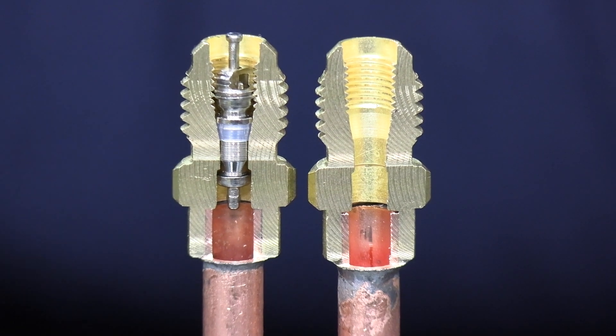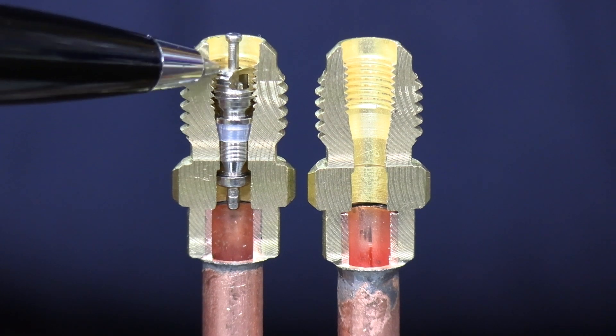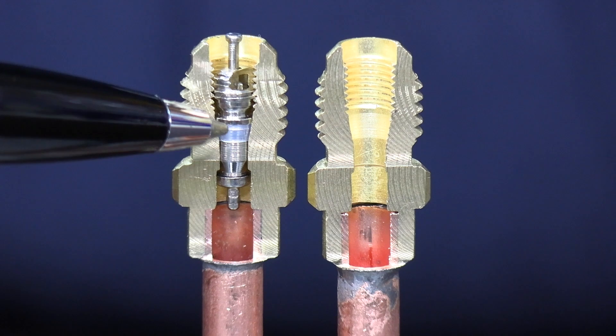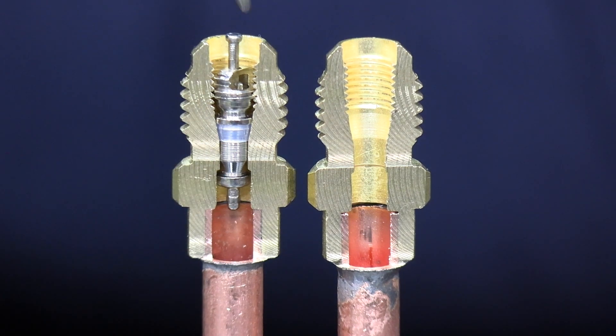Now to show you, you can just see on the top here where the refrigerant flows into the actual Schrader core, then down through the body and out through this little seal here. So if I press this now,